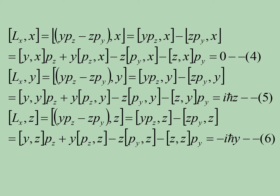Similarly, instead of y, if we do it for z, the commutation relation between Lx and z expands as: [Y, z]Pz + Y[Pz, z] minus Z[Py, z] minus [Z, z]Py. Here the first term is 0, the second term gives minus iℏ, and the other two terms are 0. So we get [Lx, z] = minus iℏy.